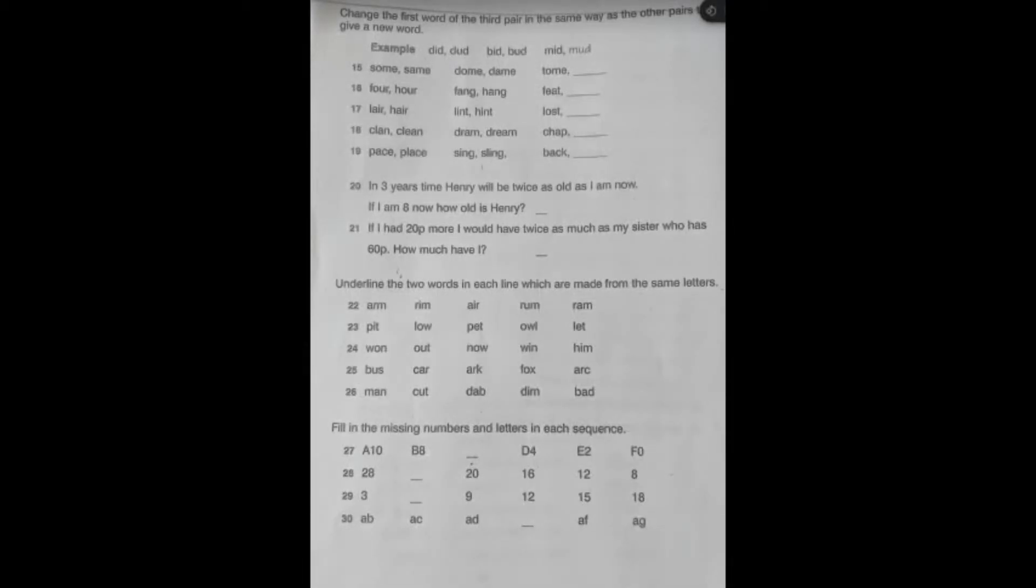On the other side, questions 15 to 19, what you need to do is change the first word of the third pair in the same way as the other pairs to give a new word. It sounds more complicated than it is. Have a look at the example so you'll see the pattern: did dud, bid bud, mid mud. So look to see what has been changed in the other two pairs of words and apply the same to the last pair.